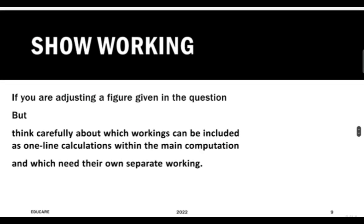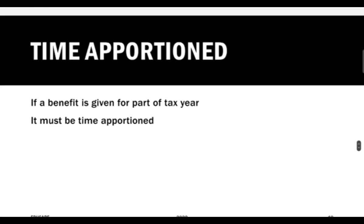Show your working. If you are adjusting a figure given in the question, think carefully about which working can be included as a one-line calculation within the main computation and which needs its own separate working. Regarding time apportionment — if a benefit is given for part of a tax year, it must be time apportioned.